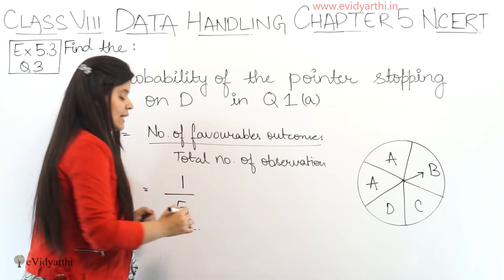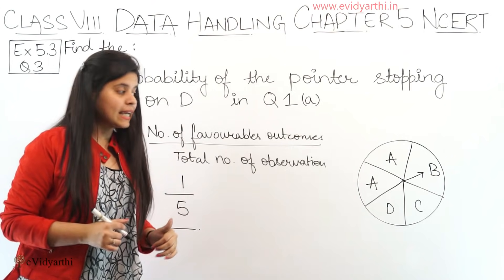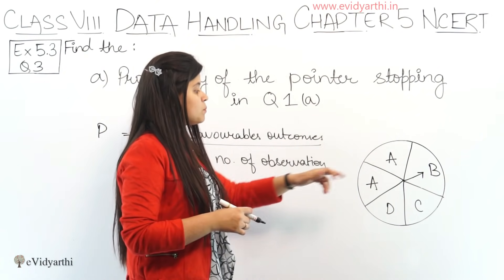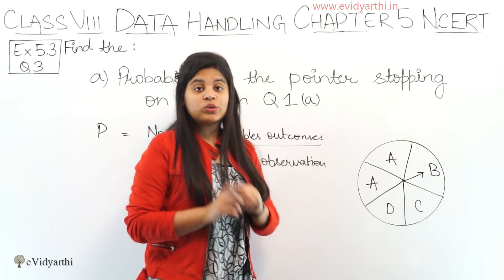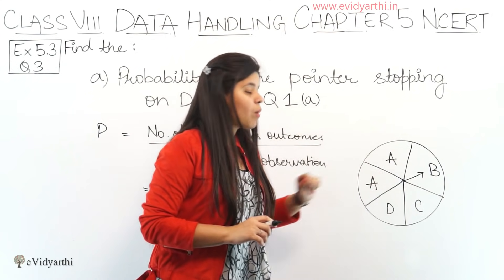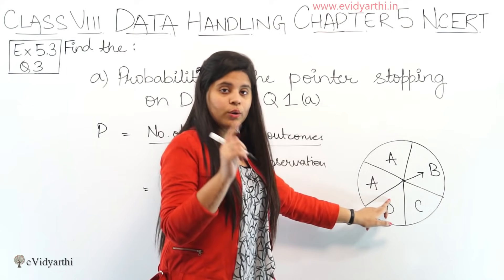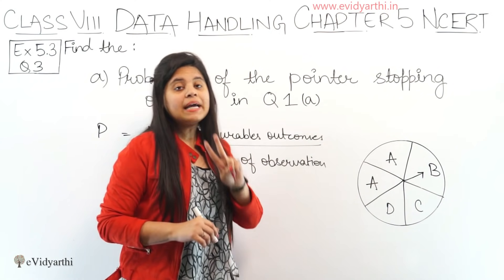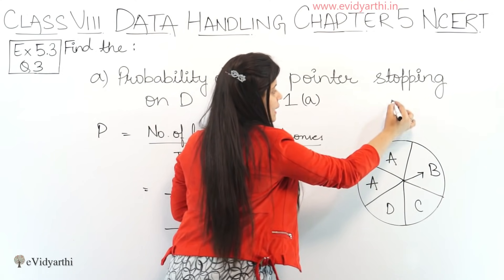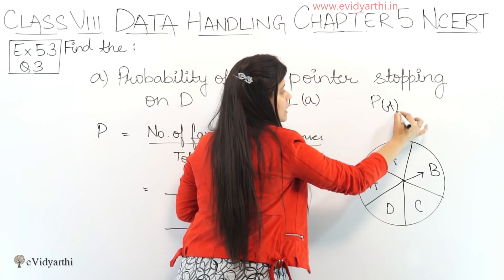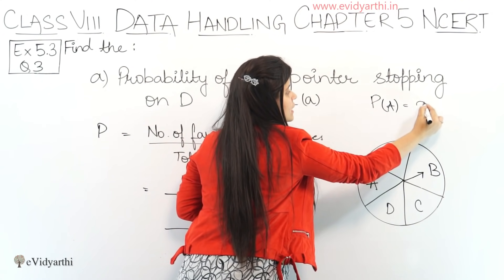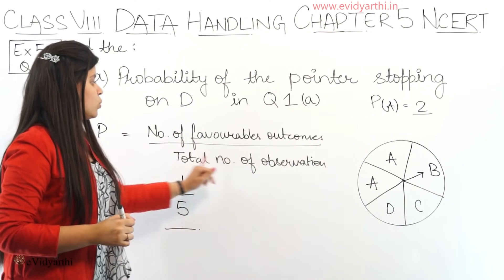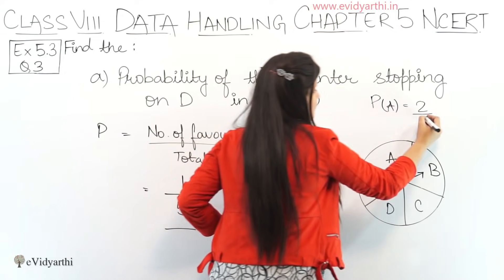So the probability of D coming is 1/5. Now, as an example, let's suppose probability of A was asked instead. A appears twice on the spinner, meaning out of 5 sections, A can come 2 times. So the probability of A would be 2 upon 5, because A appears twice, and the total number of observations is again 5.